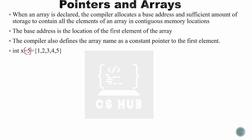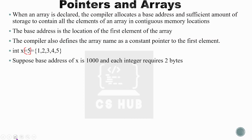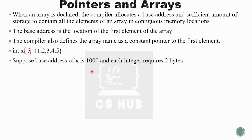For example, X[5] = {1,2,3,4,5} — 5 locations are stored in an integer array. Suppose the base address of X is 1000 and each integer requires 2 bytes. So we allocate from 1000, and since there are 5 locations with 2 bytes each, we need 10 bytes total of storage.